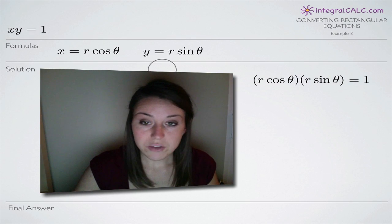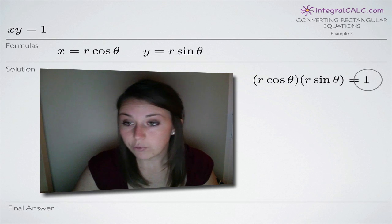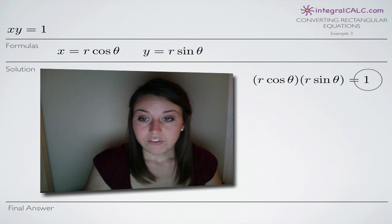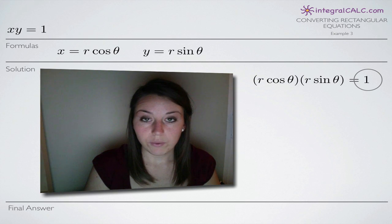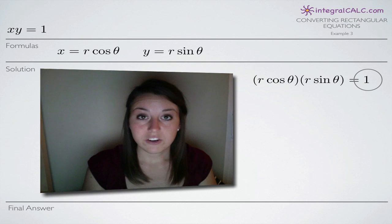When we make those two substitutions, we're left with r cosine of theta times r sine of theta equals 1. What we want to do with this is simplify it so that we get to the point where we have the equation in the form r equals something in terms of theta.